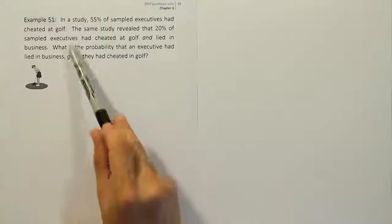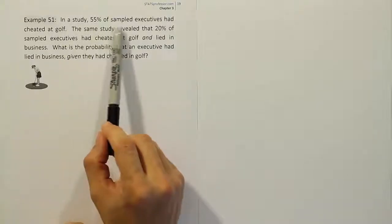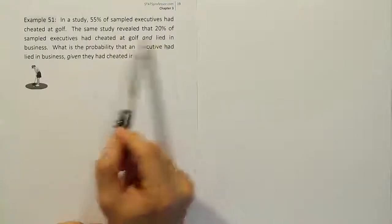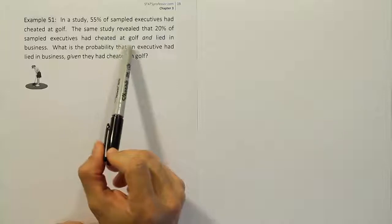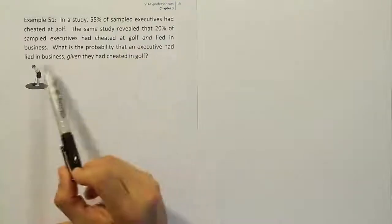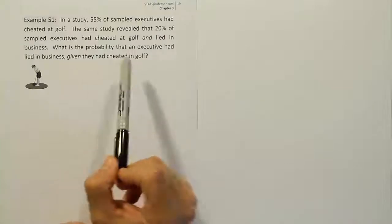Example 51. In a study, 55% of sampled executives had cheated at golf. The same study revealed that 20% of sampled executives had cheated at golf and lied in business. What is the probability that an executive had lied in business given that they had cheated in golf?